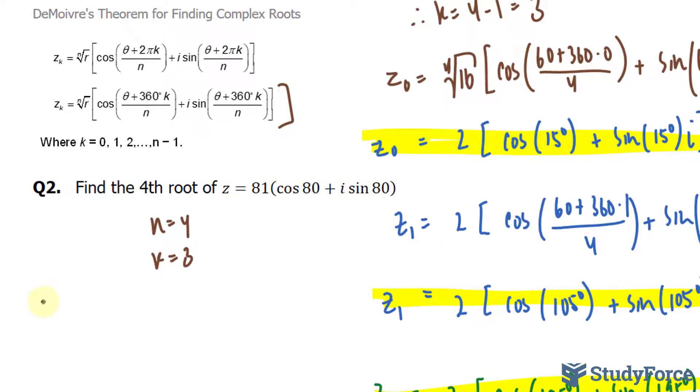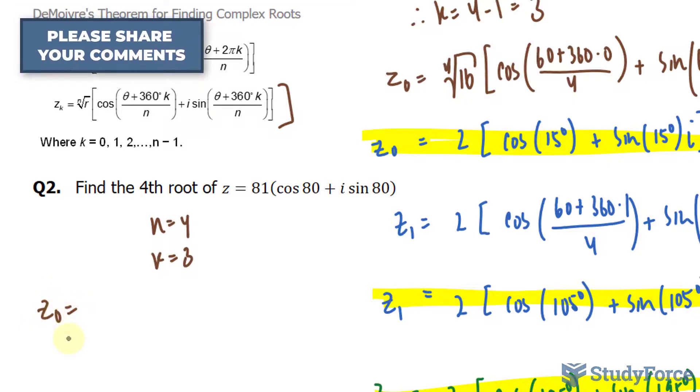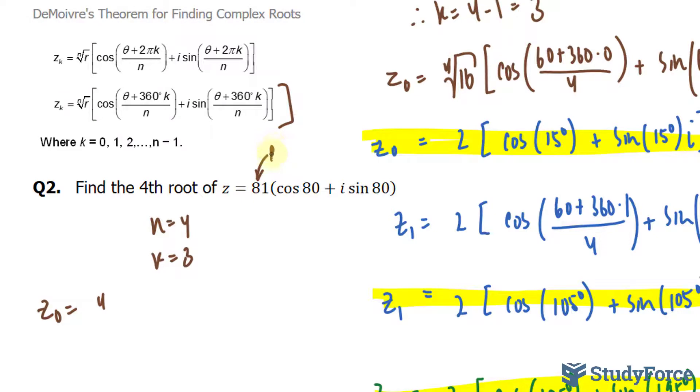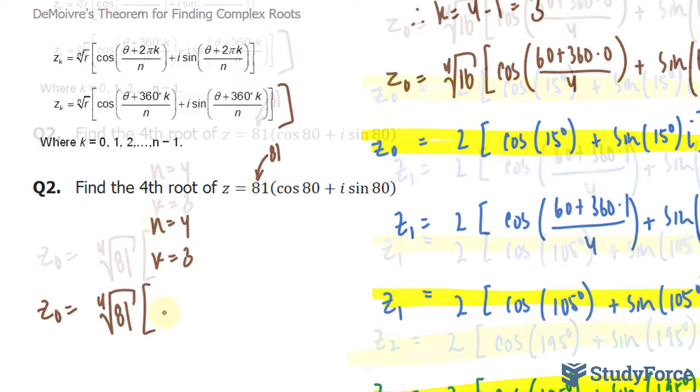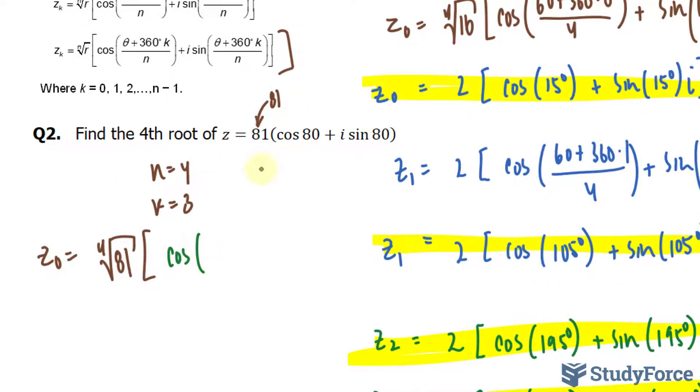Starting off with z sub-zero, we have the fourth root, our r is 81. The fourth root of 81 should give you 3. Square bracket, cosine, and our angle is 80. 80 plus 360 times 0 divided by 4.